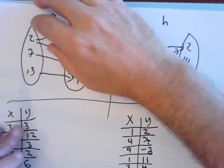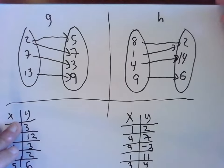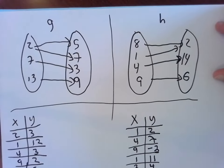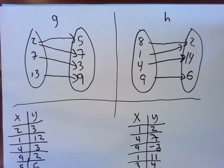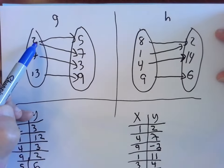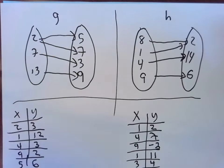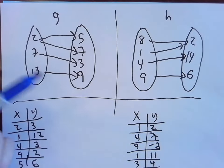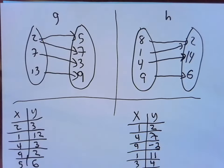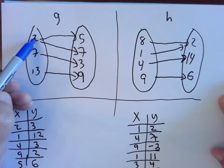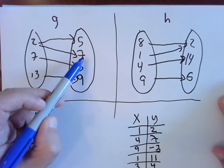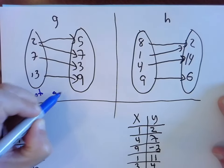In each of these cases, we want to ask: is the relation a function? With G, is this a function? The answer is no. The input 2 has two different outputs. Going back to the vending machine analogy: you hit E7, sometimes you get a Snickers, sometimes you get something else. You don't want that vending machine. Mathematicians don't like guesswork. We want to guarantee what the output will be for a given input. So G is not a function — sometimes 2 spits out a 5, sometimes a 7.